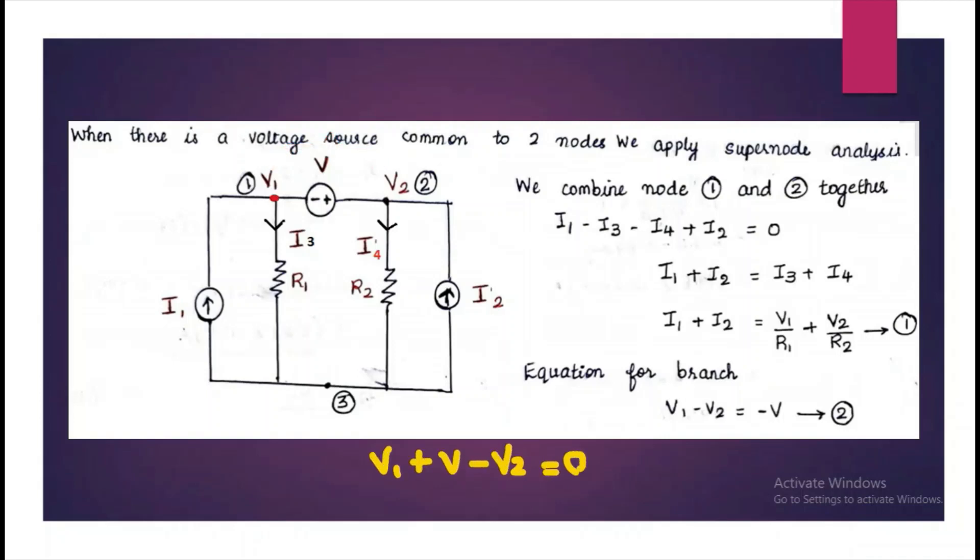The equation for the branch is V1 minus V2 is equal to minus V. So using these two equations, we can solve for the voltages V1 and V2.